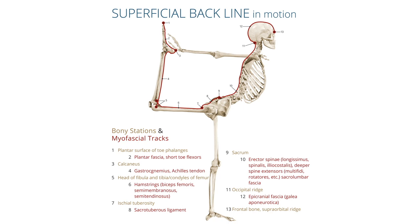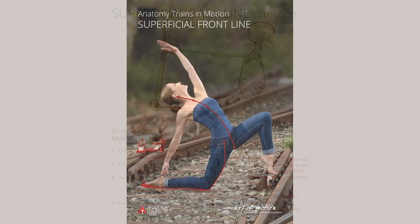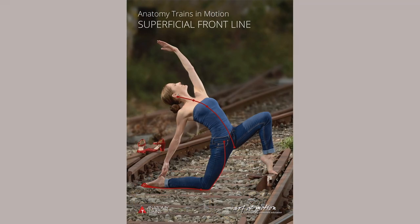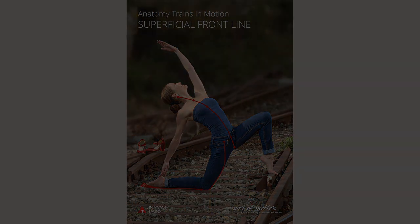Movement-wise it primarily flexes the toes, ankles, and knees, and extends the hips and spine. Its associated attributes and sensory qualities are groundedness, backbone, retrospection, perseverance, and courage. The protective and willful superficial front line is introduced next.